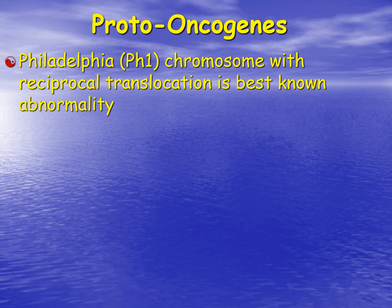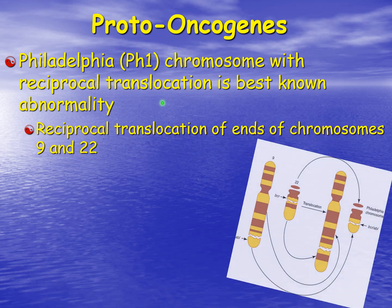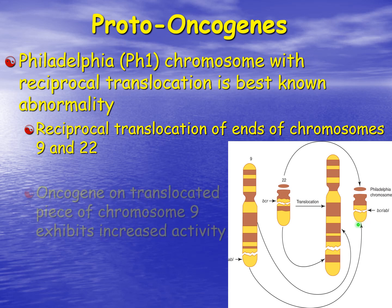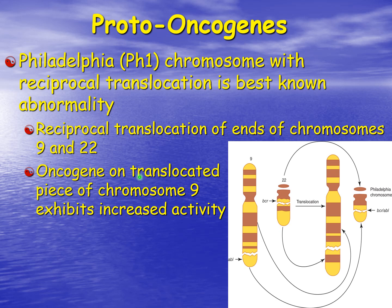We do know in one case of a translocation that can cause proto-oncogenes to become oncogenic: the Philadelphia chromosome is a reciprocal translocation best known for this. What we see is a reciprocal translocation of the ends of chromosomes 9 and 22 — we take off part of 22 and put it on 9, and take off part of 9 and put it on 22. This causes an oncogene on the translocated piece of chromosome 9 to exhibit increased activity.